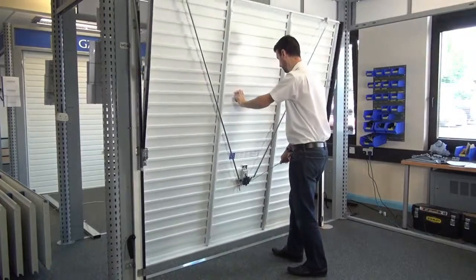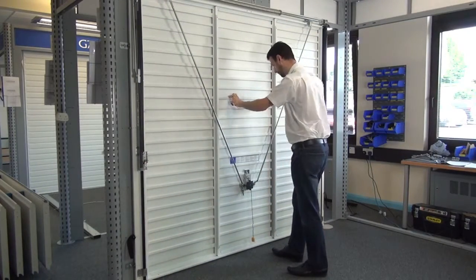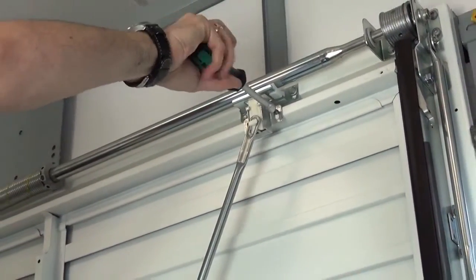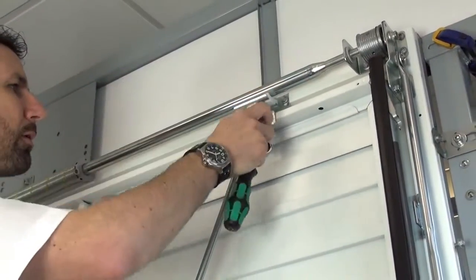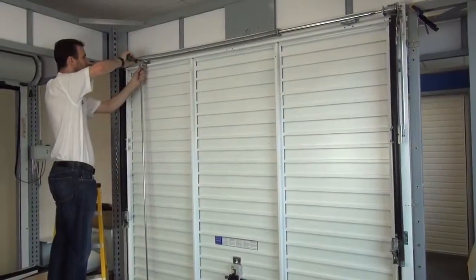Before you begin, please make sure your canopy garage door is in the closed position. First, remove the latches from the top of the door by unscrewing the 10mm hex head screws. Then remove the two locking rods.